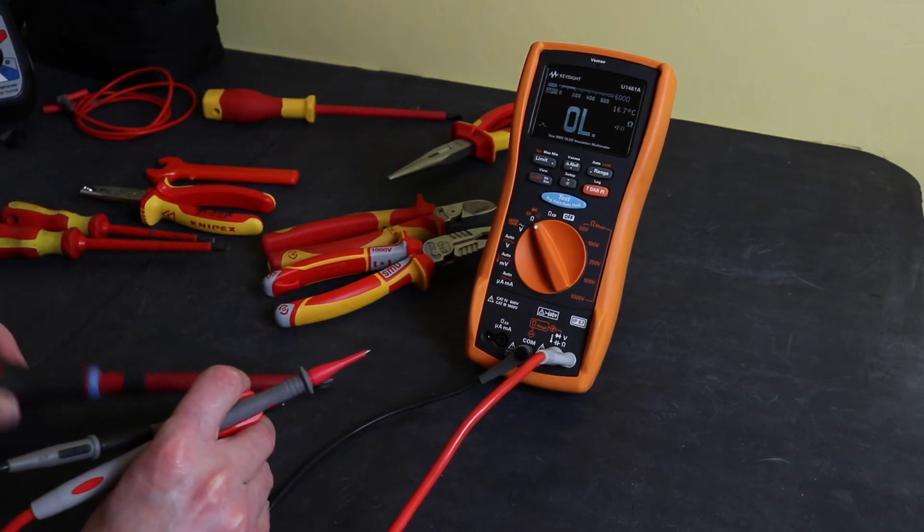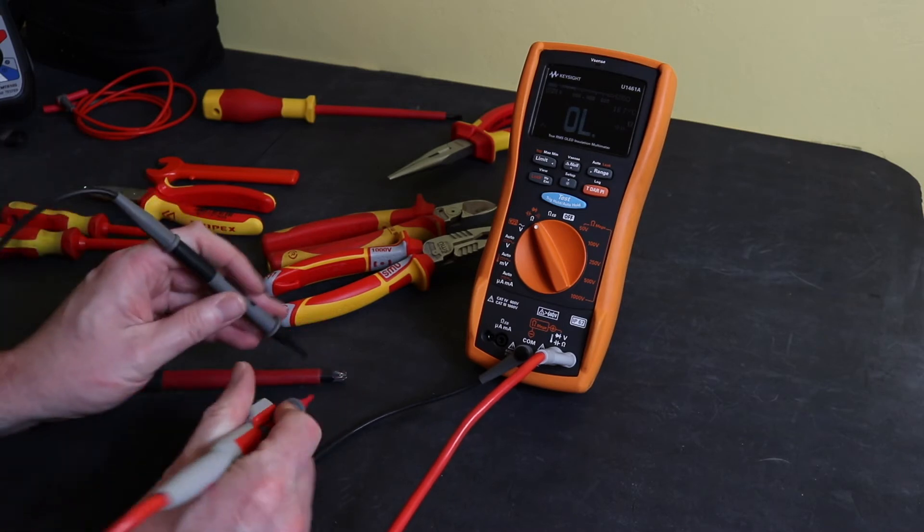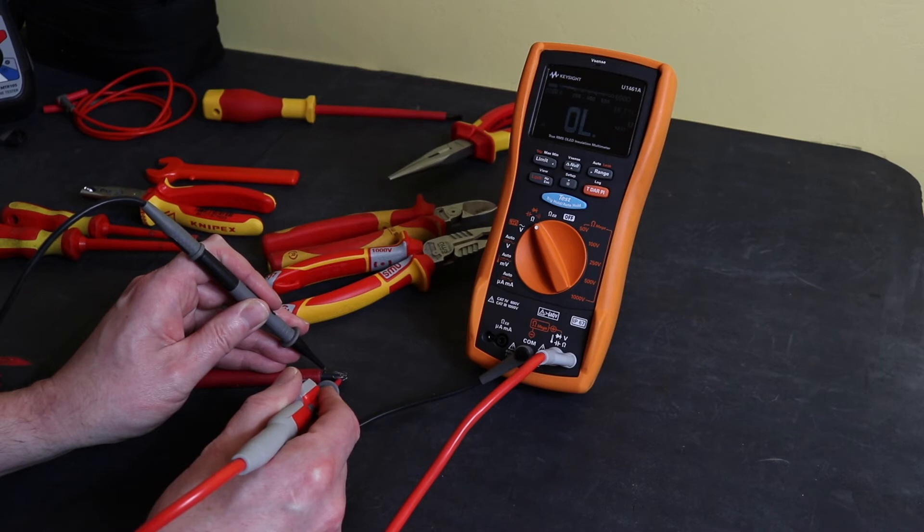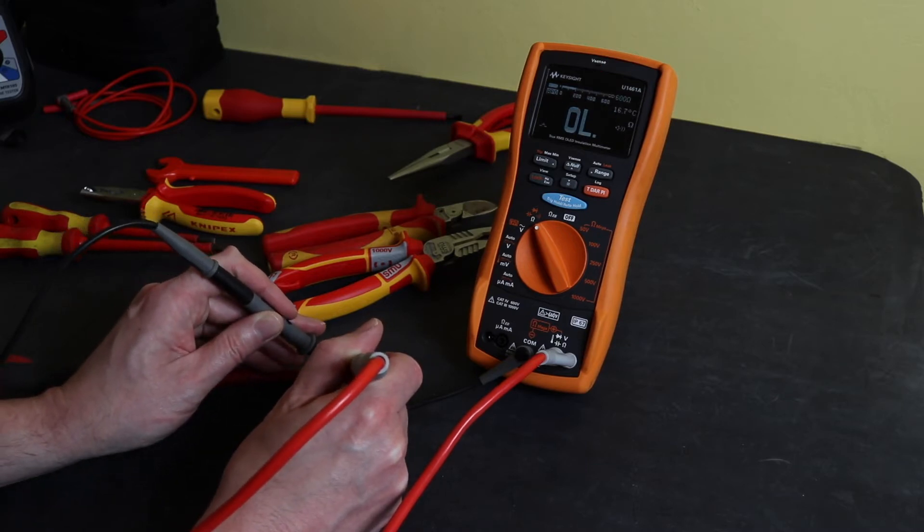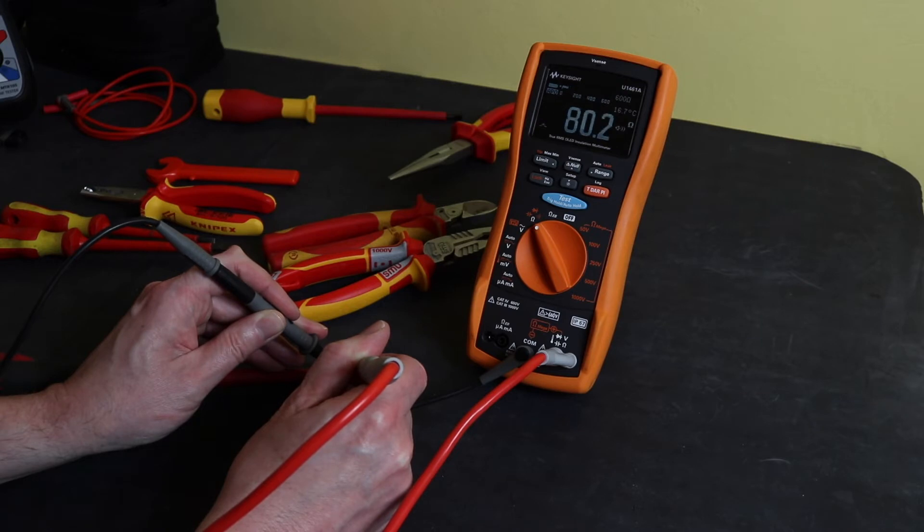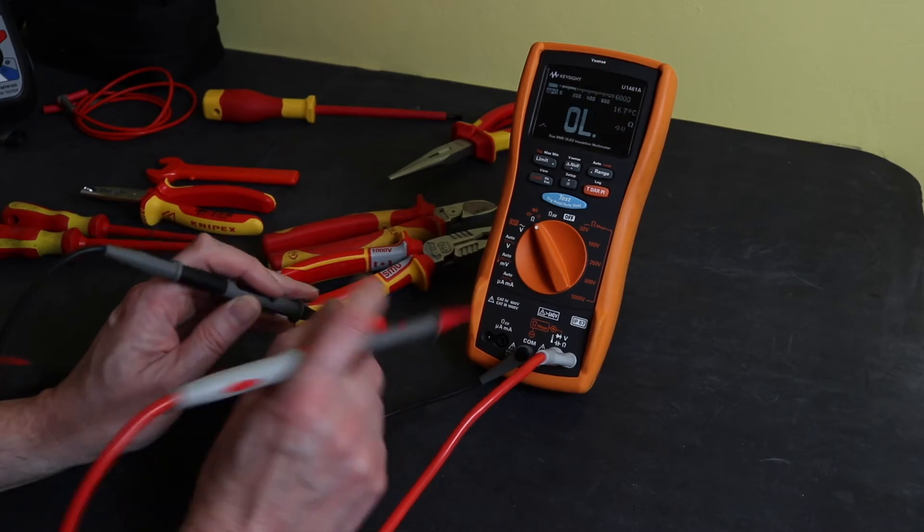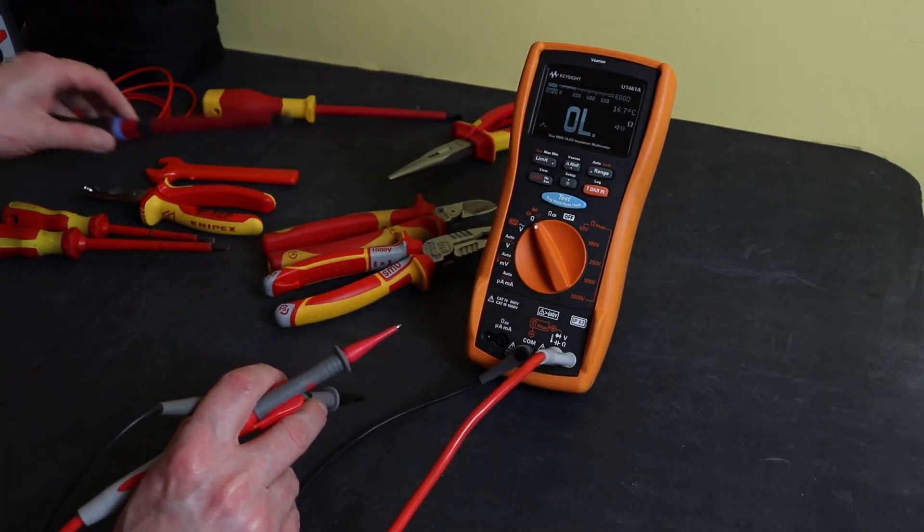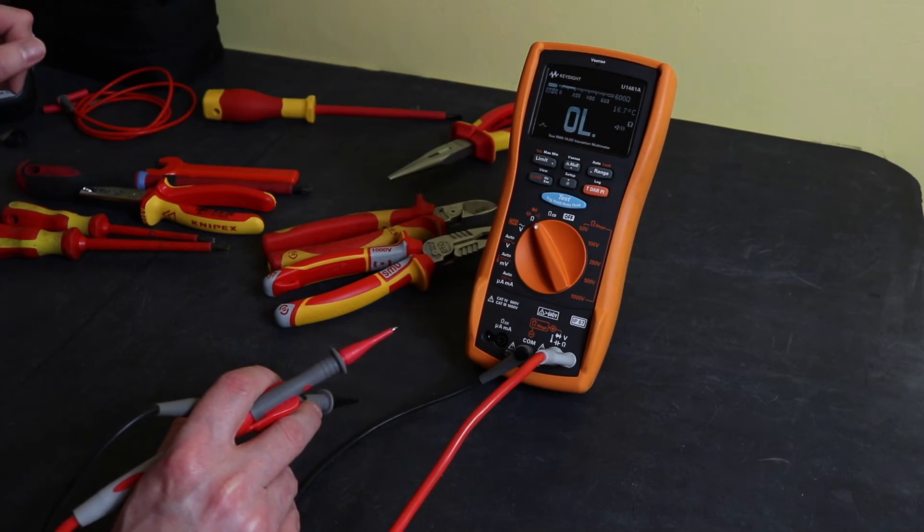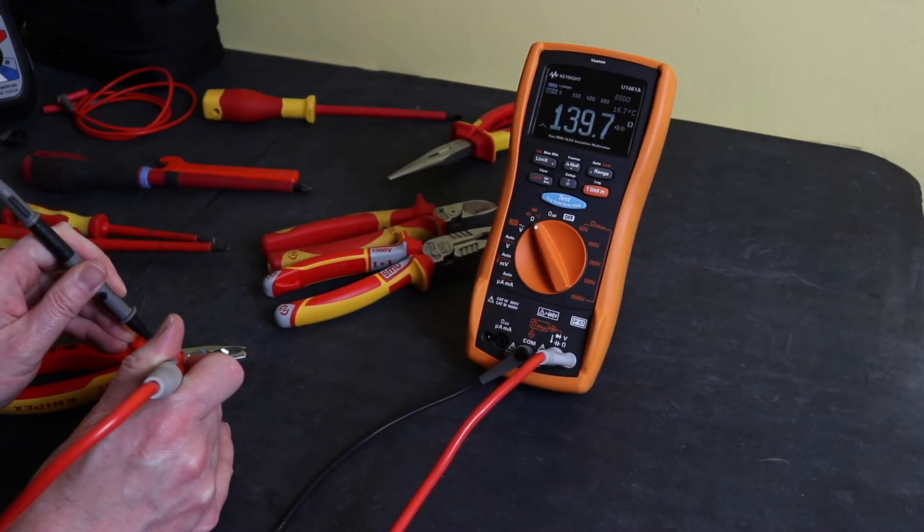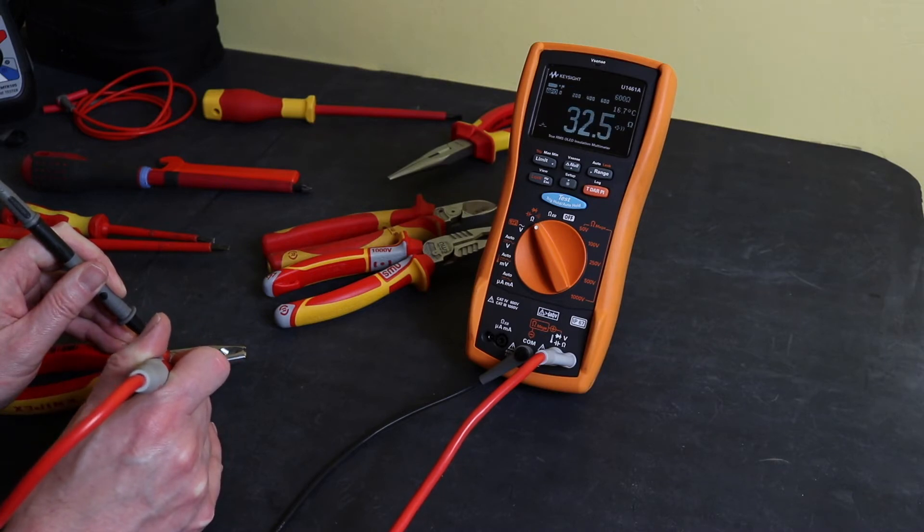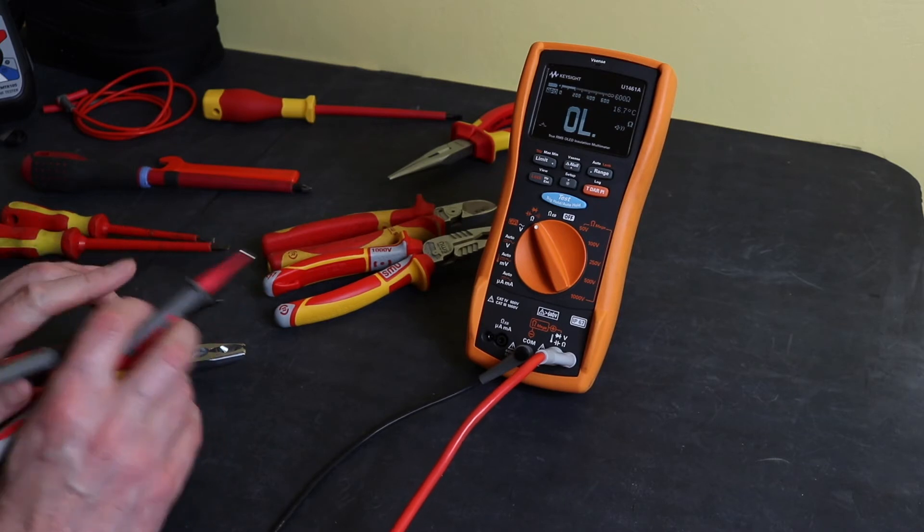Let's try something else. This is another everyday carry of mine, this is a Baker number three Phillips. Similar sort of result. It's not fully conductive but it's bouncing around a little bit, but it's not what I'd call insulating. These are Knipex stripping pliers, pretty much brand new. Again it's not giving me the beep but it's not exactly insulating either.